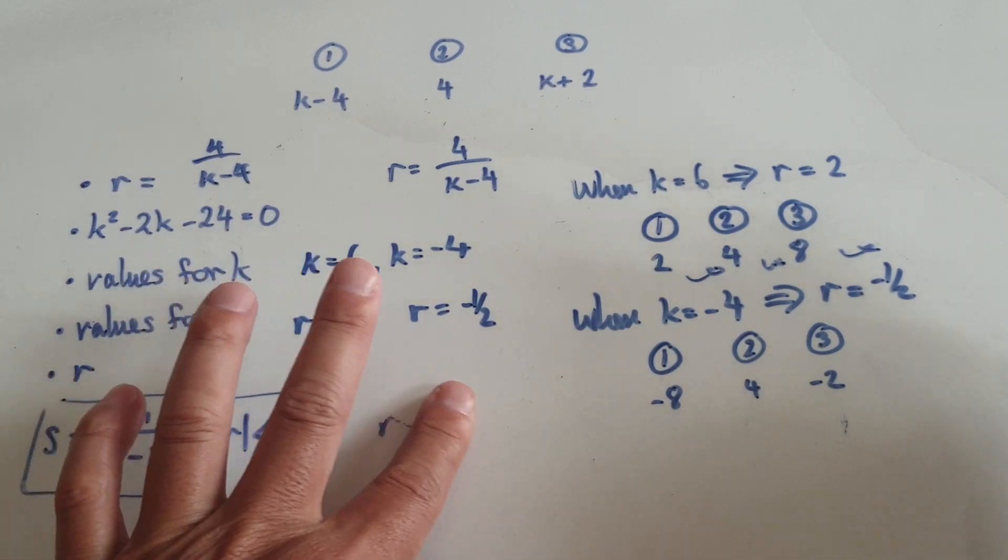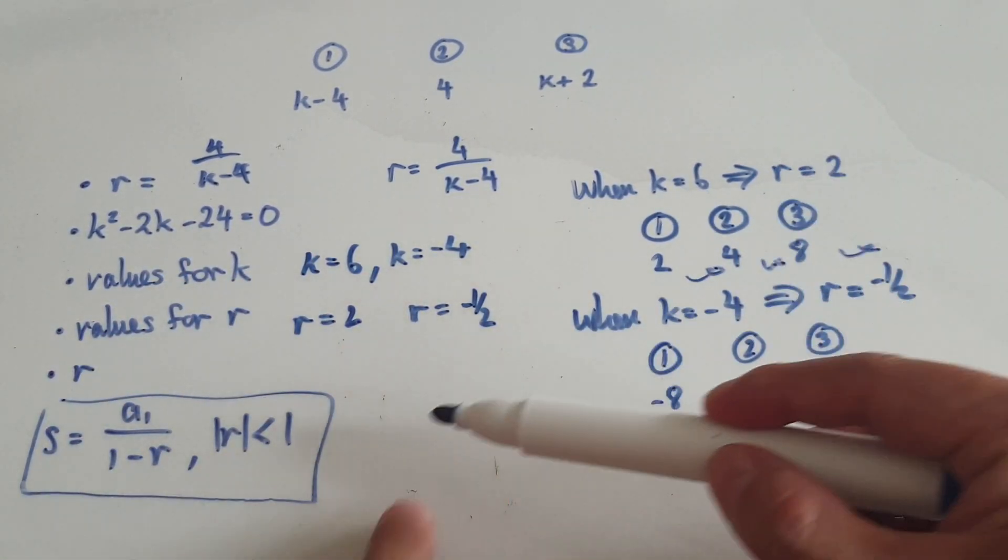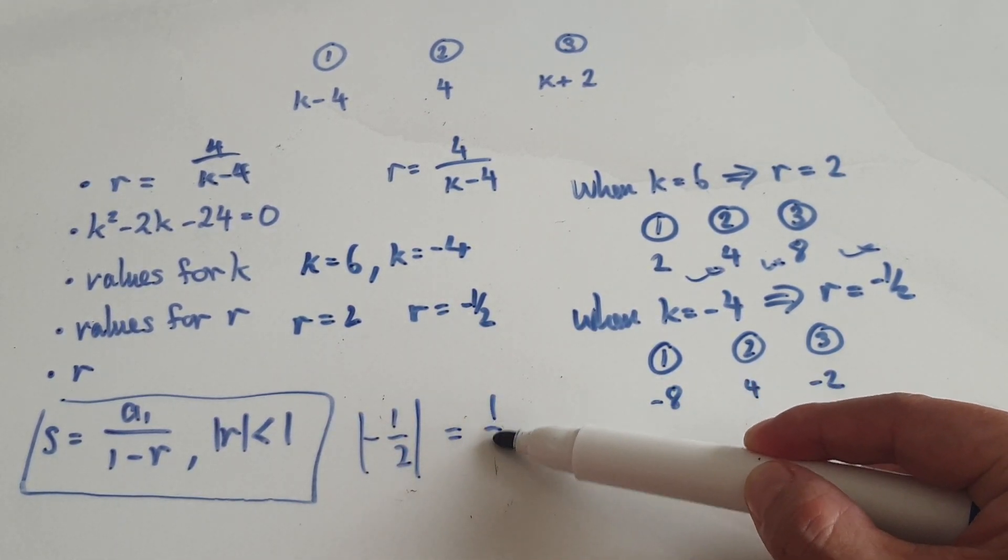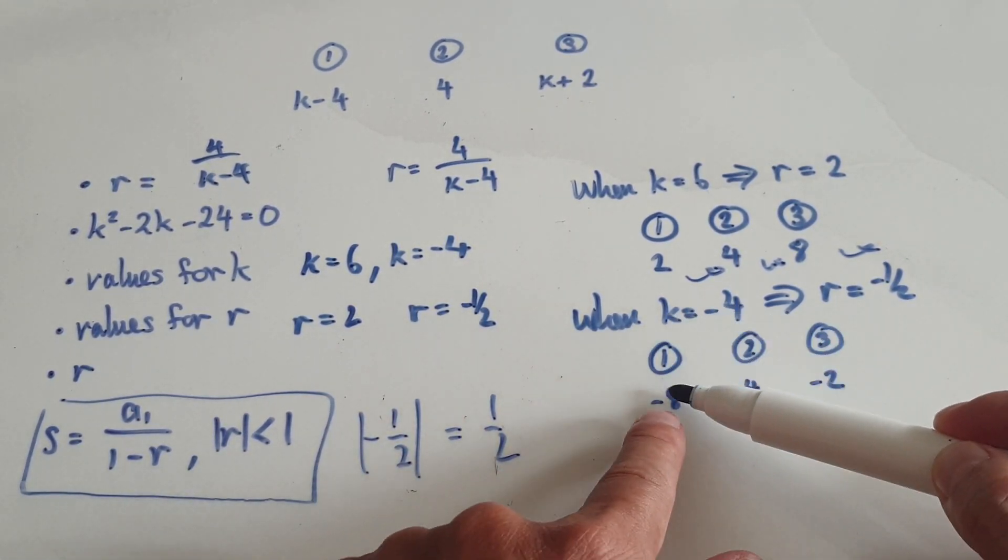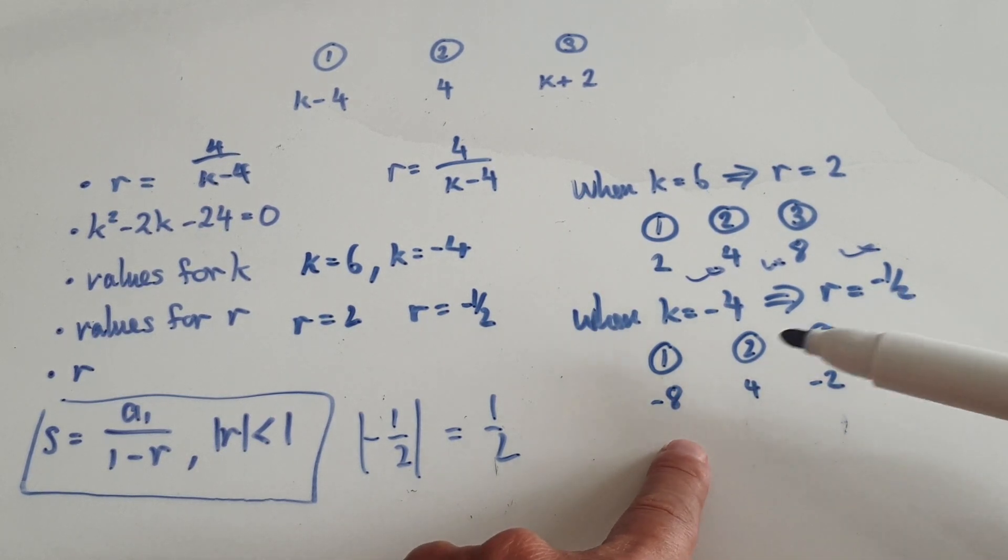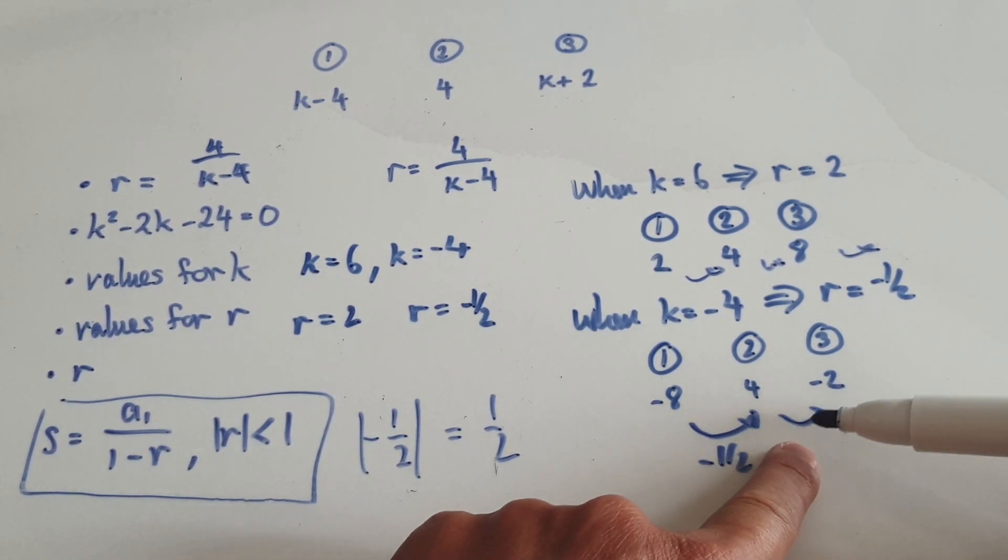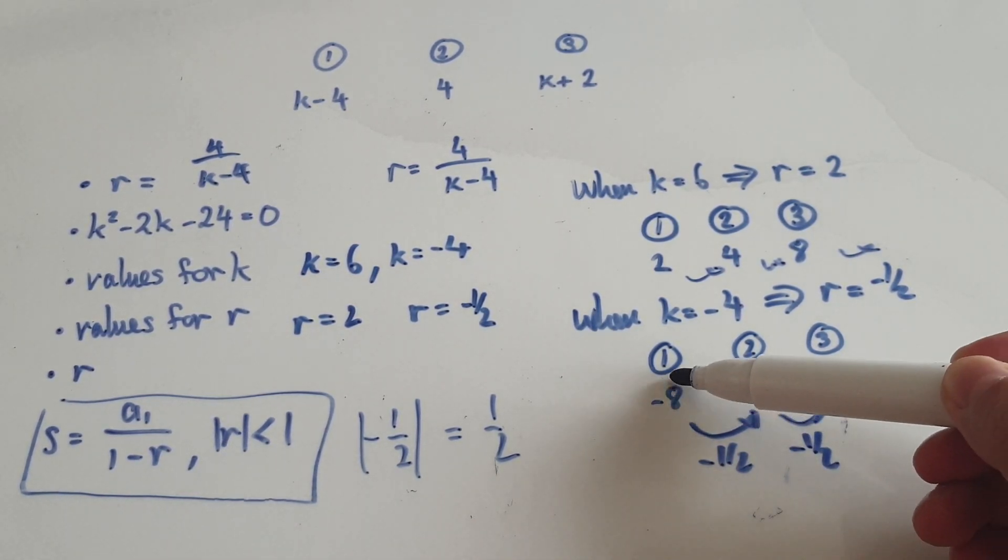But in the case where r is negative a half, when you take the absolute value it is a half. A half is less than 1, so you can sum up this whole thing. When you times by negative a half, times by negative a half, you can actually sum up everything here.